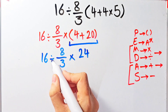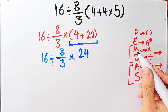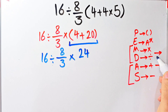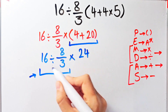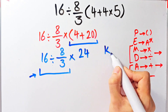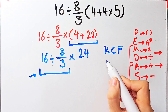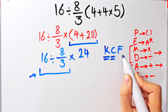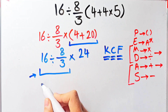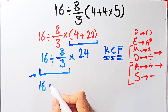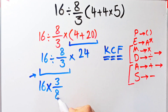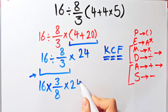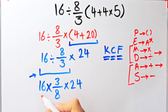We have division and multiplication. Because they have the same level of priority, we start from the left and simplify. In the first part we have 16 divided by 8 over 3. To solve this part we need to follow the KCF rule. K stands for keep, C stands for change, and F stands for flip. We keep the first number as it is, change the division sign to a multiplication sign, and flip the second fraction. Because we now have two multiplications, we start from the left: 16 divided by 8 equals 2, and 8 divided by 8 equals 1.